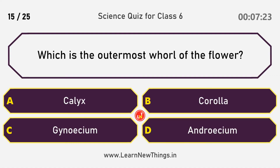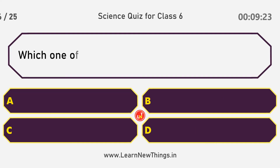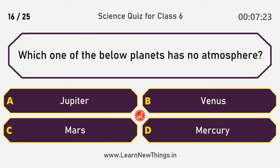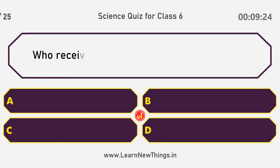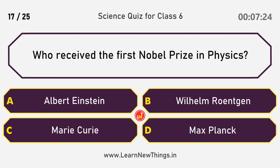Which is the outermost wall of the flower? Answer: Calyx. Which one of the below planets has no atmosphere? Answer: Mercury.